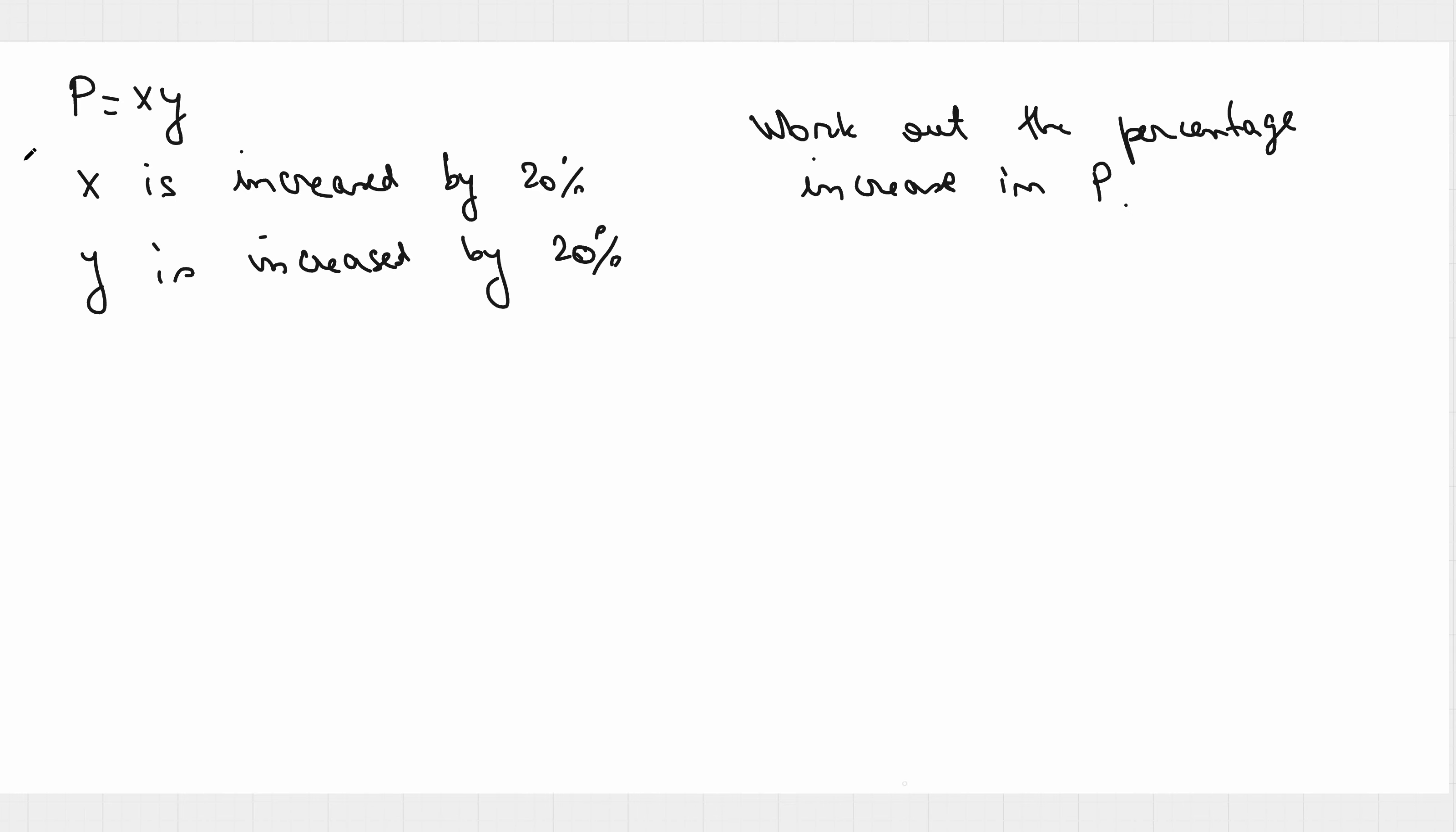Hello to everyone! If we know that p is x times y and x is increased by 20%, y is increased by 20% as well, work out the percentage increase in p.